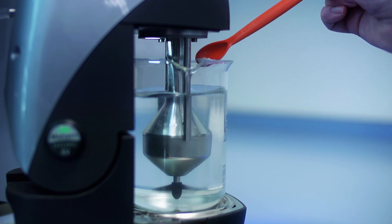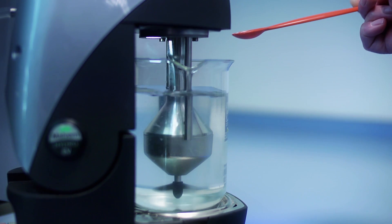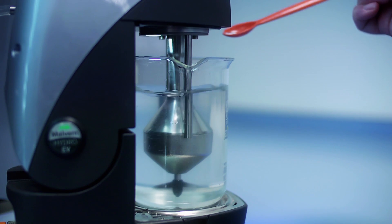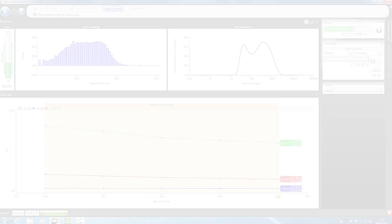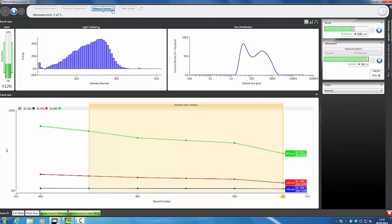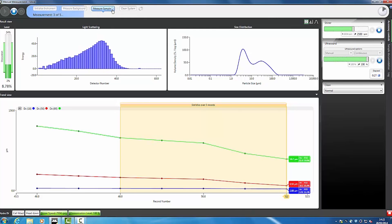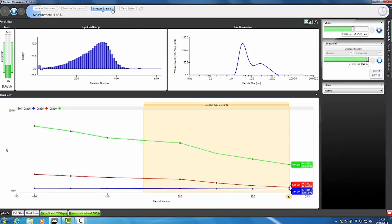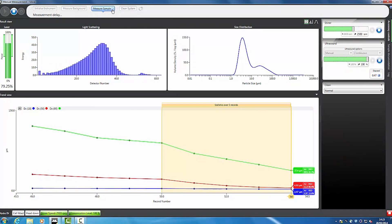Method development requires a user to select the optimum dispersion settings to achieve stable, reproducible results. Live feedback of the dispersion process quickly shows when the sample concentration is suitable for measurement. The process of sample dispersion during stirring and the application of inline sonication can then be followed within the measurement manager. This shows the decrease in particle size which occurs during dispersion until the size stabilizes and there are no more agglomerates.